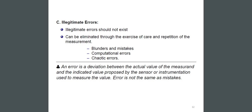An error is a deviation between the actual value of the measurement and the indicated value proposed by the sensor or instrumentation used to measure the value. Error is not the same as mistakes.